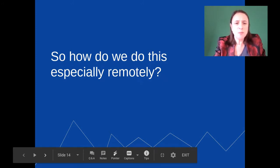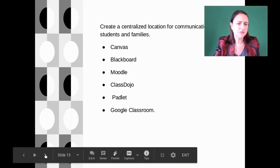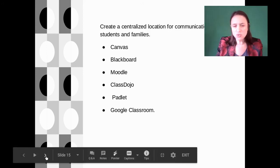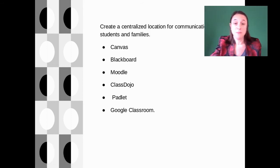How do we do this remotely? This is a real stumbling block. We're thinking, how are we supposed to get this information across when we have so many things we want to do and half of us are working remotely? The first thing we want to do is create a centralized location for communication with students and families. We want to use Canvas, Remind, Google Classroom, Class Dojo, whatever it is. We want parents and students to be able to log on and see exactly what's happening in the classroom, and make sure they're able to communicate with you.